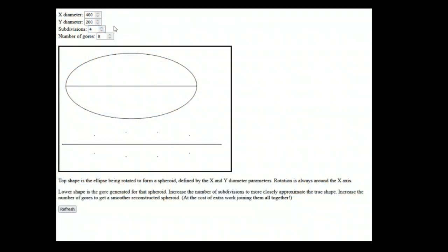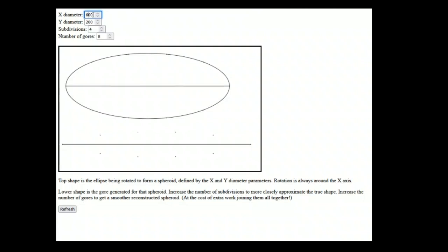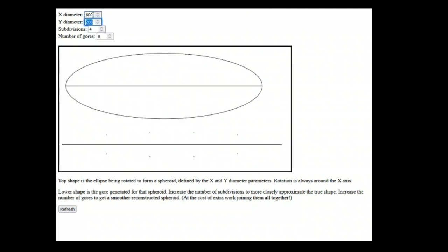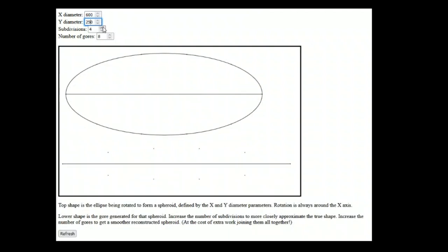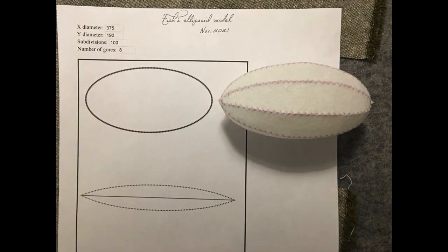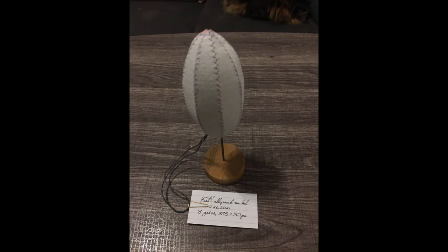At this point, the rest of the process is the same, it's just a matter of coding it up. Which is what I did, resulting in this simple little web app. Link in the description. You can set the x and y size of the ellipse, the number of gores, and the number of subdivisions for the perimeter. Using these, it will give you gores to approximate the shape formed by rotating that ellipse around its x-axis. And it worked, at least well enough for my friend's purposes. I couldn't stop thinking about the problem though.